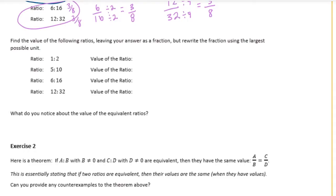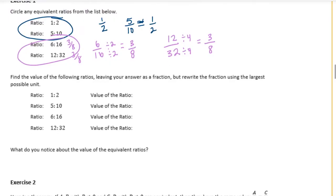Find the value of the following ratios, leaving your answer as a fraction, but rewrite the fraction using the largest possible unit. So we have a ratio of 1 to 2, and what we want to find is the value of the ratio, which is basically just putting it in simplest form. We've actually already done all of these above. The ratio 1 to 2, the value was 1 half. The ratio 5 tenths, the value is also 1 half. And 6 sixteenths was 3 eighths, and 12 thirty-seconds was 3 eighths as well.